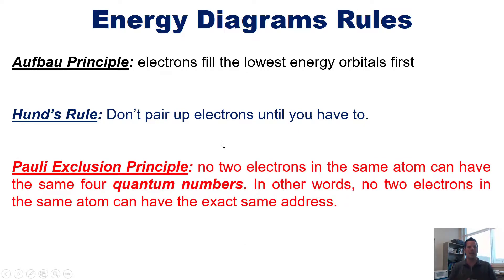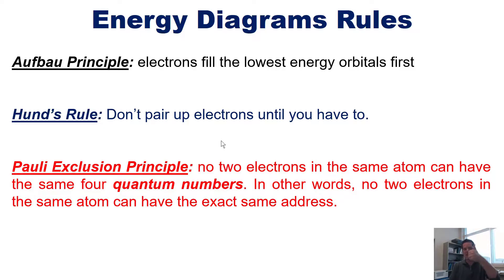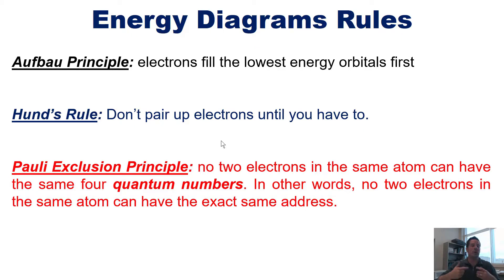In other words, no two electrons in the same atom can have the exact same address. So if two electrons are in the same orbital box, one must have spin +1/2 (up arrow) and the other must have spin -1/2 (down arrow). They can share the same first three quantum numbers, but their spin quantum number must differ. These are the principles you should remember.